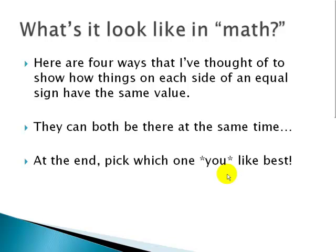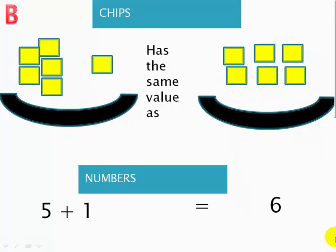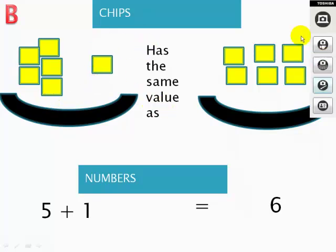Now what's that look like in math? Here are four ways that I've thought of to show how things on each side of an equal sign have the same value. They can both be there at the same time. At the end, pick which one you like best. First one: five chips put together with one chip equals six chips. 5 plus 1 equals 6. Here I made the dishes the same size. Same idea. Five put together with one has the same value as six.